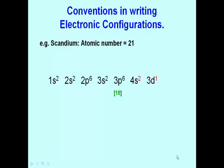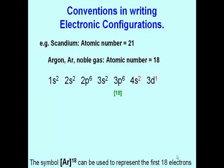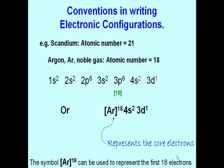Now to avoid writing this in a lengthy way, the core electrons can be represented using the symbol of the nearest noble gas. The nearest noble gas to scandium in the periodic table is argon. Argon has an atomic number of 18, and so the symbol for argon can be used to represent the first 18 electrons of scandium. So here we have a shorter way of writing the electronic configuration of scandium. The noble gas symbol, which is written in square brackets, represents the core electrons. The electrons present in the 4s and 3d orbitals are the valence electrons.